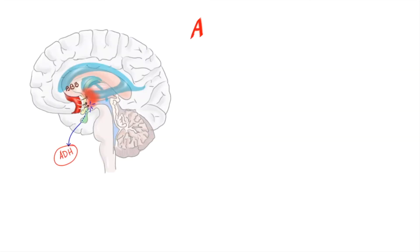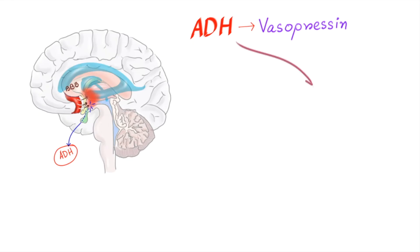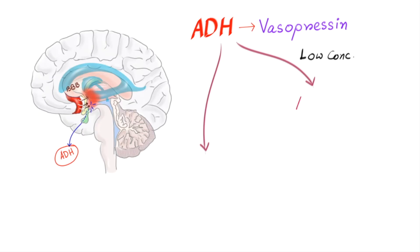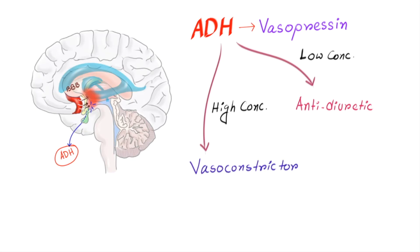Now let's see how ADH works. The other name of ADH is vasopressin because it can cause vasoconstriction. But to produce antidiuresis, a small amount of ADH is enough. Whereas for vasoconstriction, it needs a larger amount of ADH. So in low concentration it acts as an antidiuretic hormone, and in high concentration it acts as a vasoconstrictor.